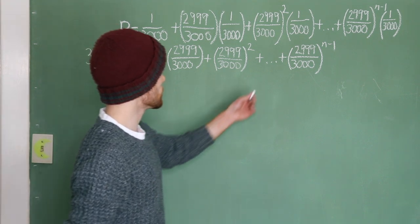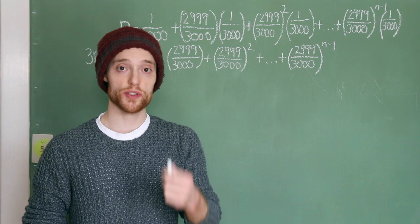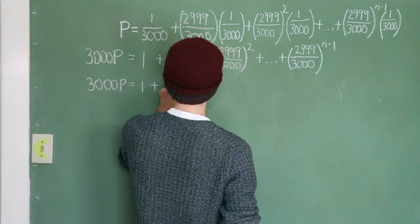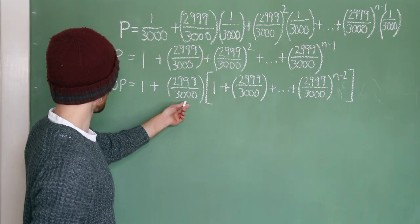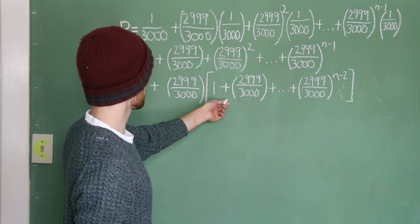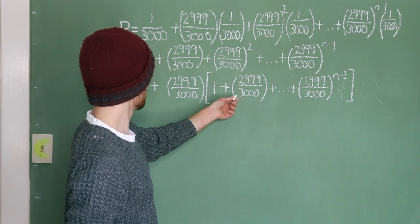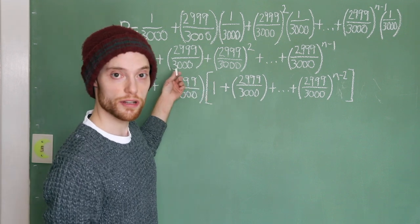Now, the issue is that we have these ellipses here. We don't know how many terms we're dealing with, but watch what happens when we factor out a term. This is the term we factored out, and now we have this series in here inside the brackets. But look, this series in here is this series up here.